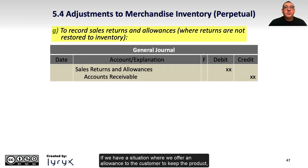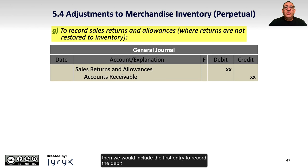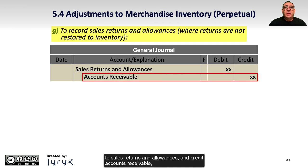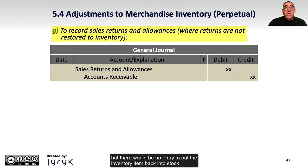If we have a situation where we offer an allowance to the customer to keep the product, or if the product is returned and cannot be resold, then we would include only the first entry to record the debit to sales returns and allowances and credit accounts receivable, but there would be no entry to put the inventory item back into stock with an adjustment to merchandise inventory or a reduction to cost of goods sold.